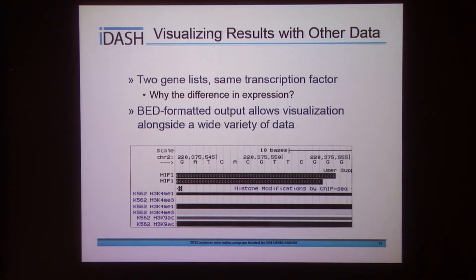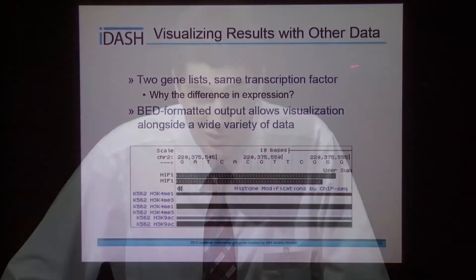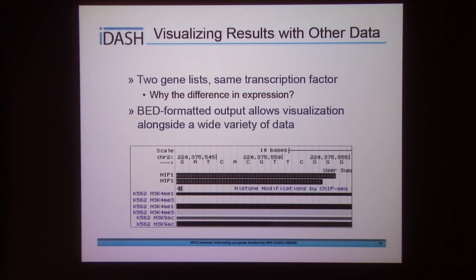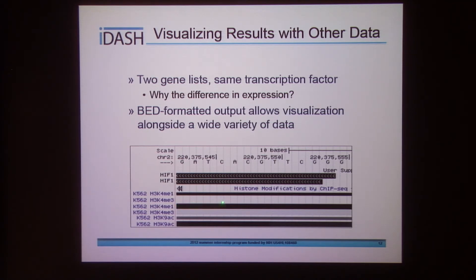Another common circumstance with microarray data is you have two gene lists instead of one — one list of up-regulated genes and another list of down-regulated genes. Say you put both of those gene lists into Whole Genome R-Vista and get the same transcription factor out. Well, if the two lists of genes are regulated by the same transcription factor, why is there a difference in expression? BED-formatted output allows visualization alongside other publicly available data on various genome browsers, so you can try to figure out the answers to these questions. Here's a HIF transcription factor binding site alongside public histone modification data, so you can figure out what's actually going on under different conditions.